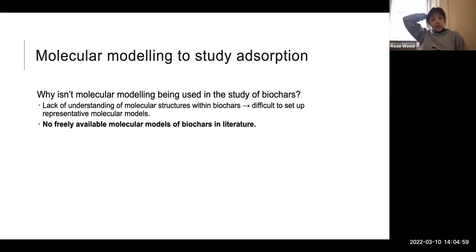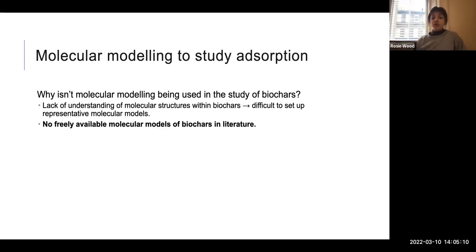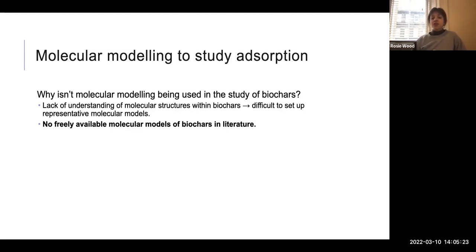So why isn't it being used yet? I think there are two main reasons. The first is there's a lack of understanding of the molecular structures within biochars, and this means it's difficult to set up representative molecular models. The second problem is that there are no freely available molecular models of biochars in literature, meaning anyone wanting to model biochars has to start from scratch and overcome this barrier of difficult model set up. Both of these things I'm trying to resolve in my work — I'm hoping to develop some molecular models and then make them freely available so other people can use them too.